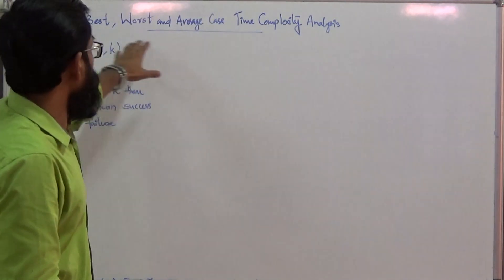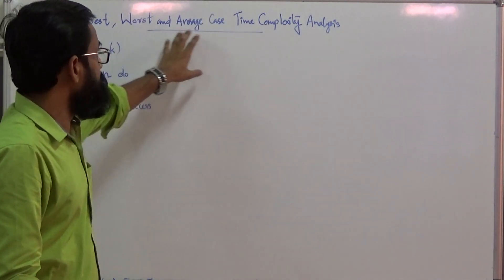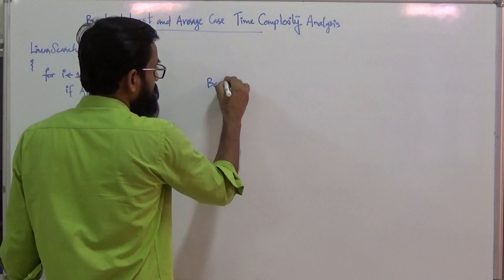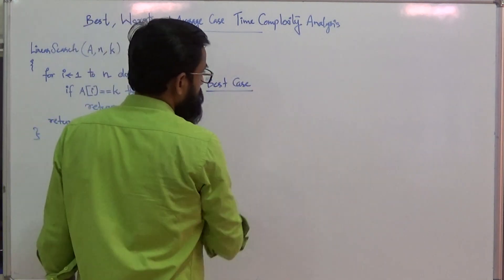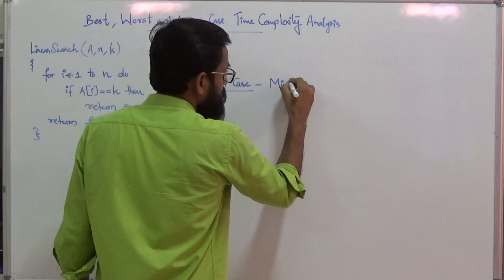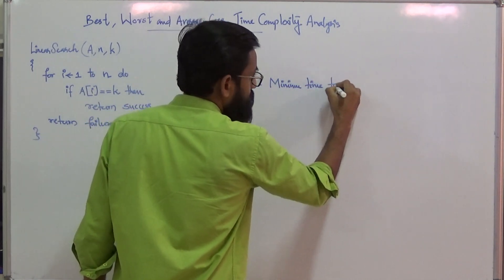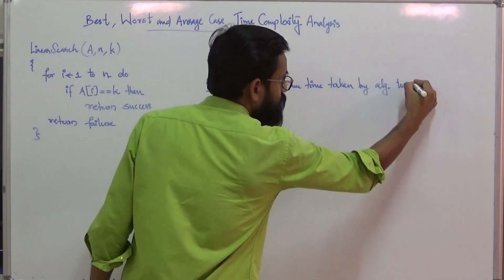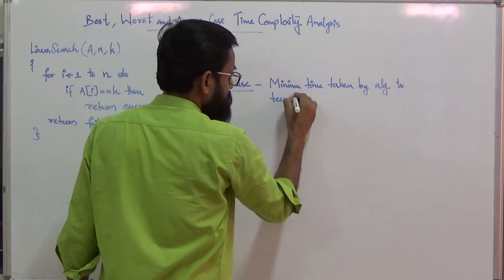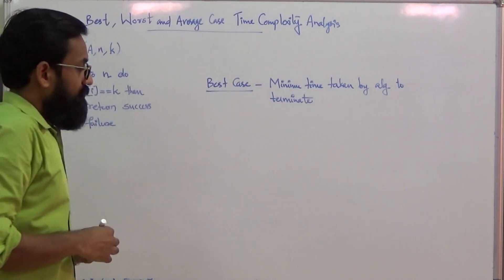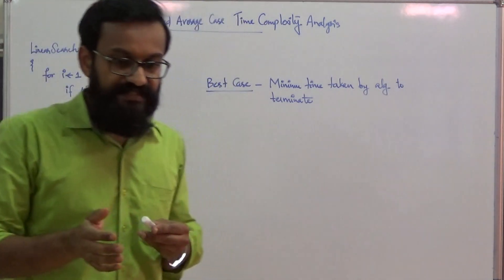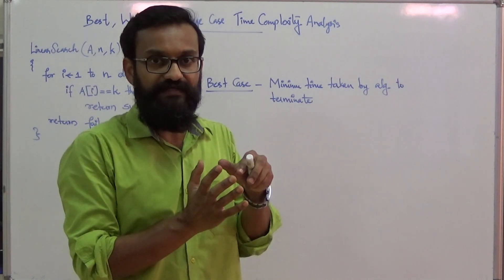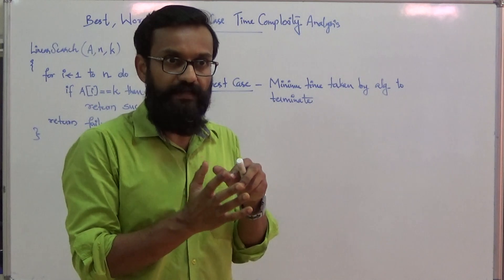Best case time complexity is the minimum time taken by an algorithm to terminate. There will be some set of inputs for which the algorithm terminates by performing a minimum number of steps or taking minimum time.